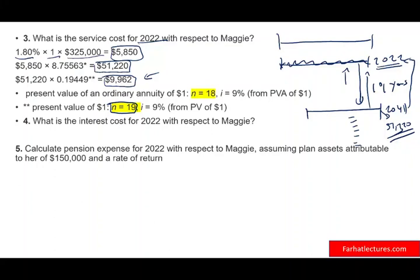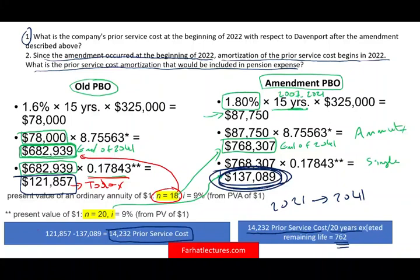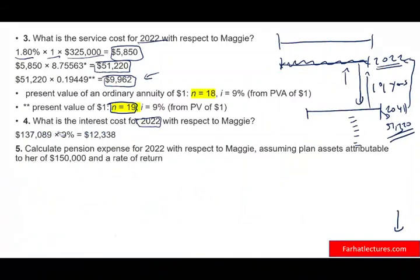The fourth question is: what is the interest cost for year 2022 with respect to Maggie? Interest cost equals the beginning-of-year PBO times the discount rate. The beginning PBO is $137,089 — we already computed this. So we take $137,089 times 9%, which gives us the interest cost, which is part of the pension expense formula.